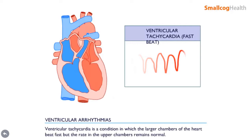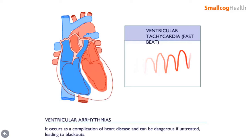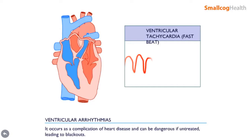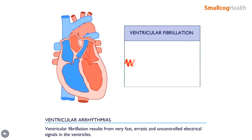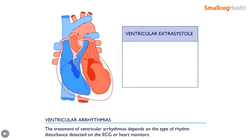Ventricular tachycardia is a condition in which the larger chambers of the heart beat too fast while the rate in the upper chambers remains normal. It occurs usually as a complication of heart disease and can be dangerous if untreated, leading to blackouts. Ventricular fibrillation results from very fast, erratic, and uncontrolled electrical signals in the ventricles — a potentially very dangerous rhythm that causes the heart to quiver rather than beat, invariably leading to blackouts within seconds.